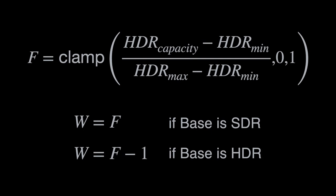And if the base rendition is HDR, then we set w to be equal to f minus 1, which lets us apply the gain map in the inverse direction. So really, w is just a scalar value between minus 1 and positive 1.